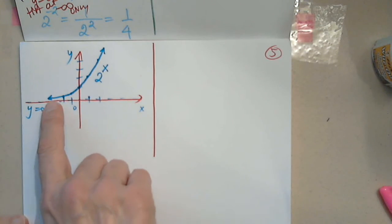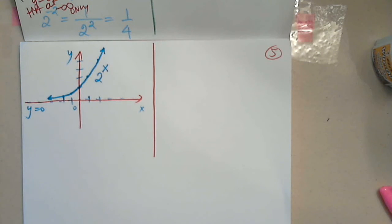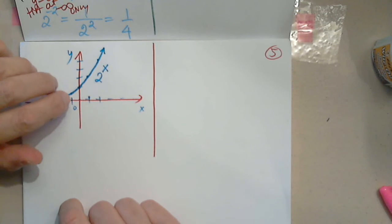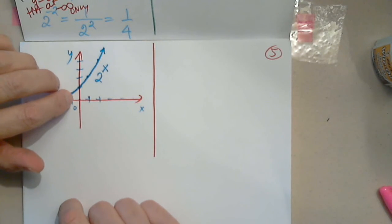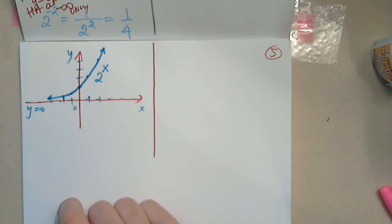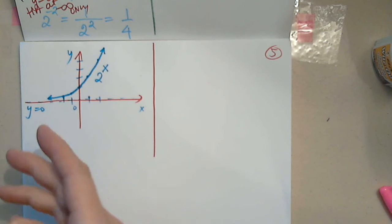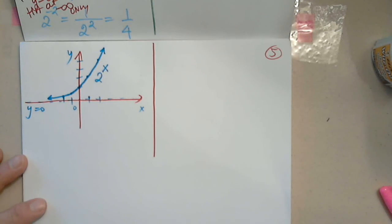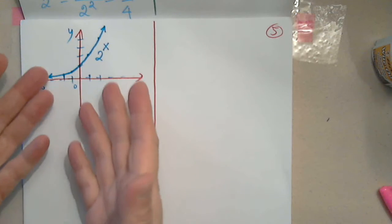Coronavirus follows this exponential function, by the way. That's why one day there are 10, the next day there are 300, the next day there are 5,000. This is the fastest increase possible. I didn't think we would go through this in real life, but that's what happens.